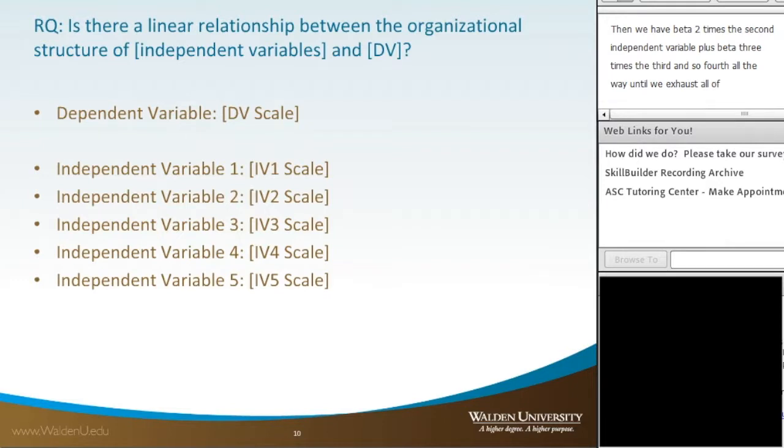For today's example, our research question, very generic, is: Is there a linear relationship between the organizational structure of our independent variables and our dependent variables? For this we're going to use our dependent variable, which we'll just call DV, which is a scale, and we're going to be using five separate independent variables, each of which is a scale.